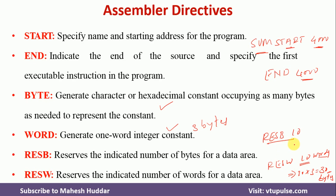These are the different assembler directives in system software. Using these we can write any assembly language program and use them at the time of converting the assembly language program into an object program.